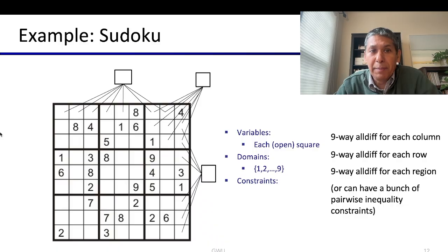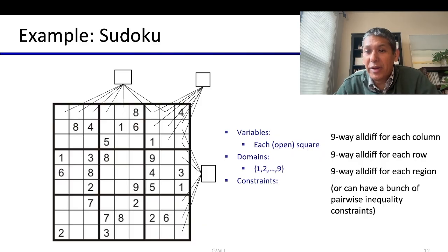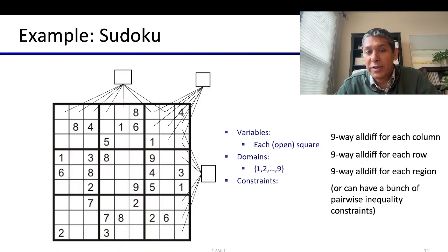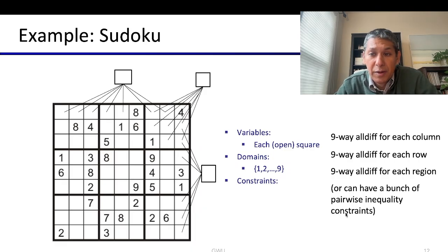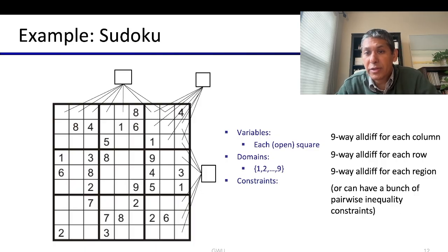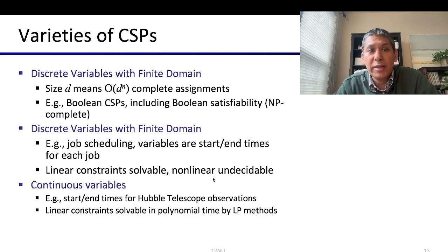Here's another example: Sudoku. Using a binary constraint graph would be too complicated here, because you'd have nine variables per row/column/mini-square and would need nine-choose-two, that is 36, pairwise constraints each — 36 times 3 total. The general constraint graph lets you write just nine constraints for the nine columns, nine for the rows, and nine for the mini-squares, which is far simpler.